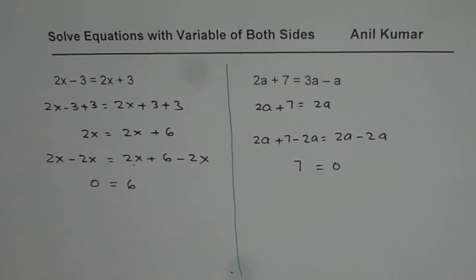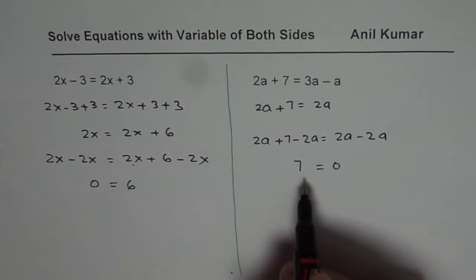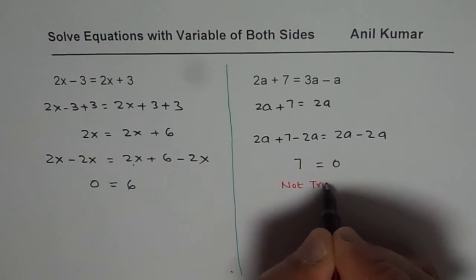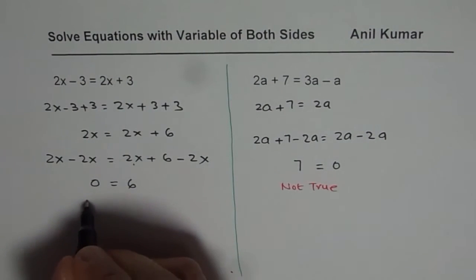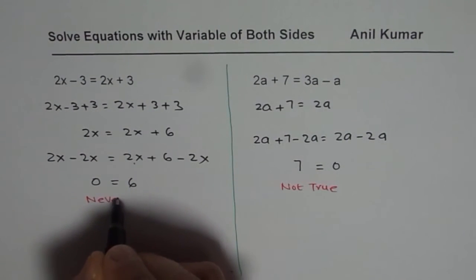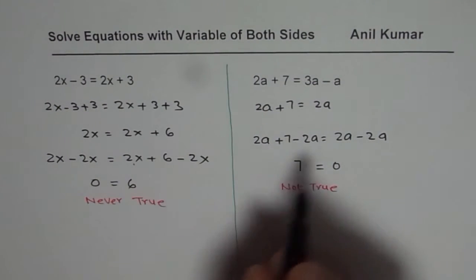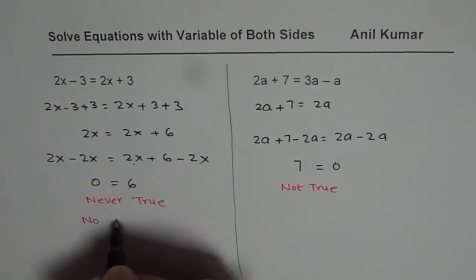Now as you can see, 7 equals to 0, that is not true. Even 0 equals to 6 is never true. Is never true. So therefore, we say in such cases, there is no solution. There is no solution.